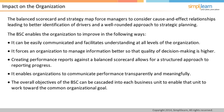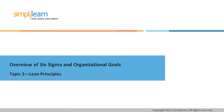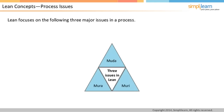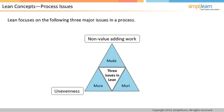In this topic, we will look at what Lean is and how Lean is applied to a process. Lean focuses on three major issues in a process, known by their Japanese names: Muda, Mura, and Muri. Muda refers to non-value-adding work, Mura represents unevenness, and Muri represents overburden. Together, they represent the key aspects in Lean.